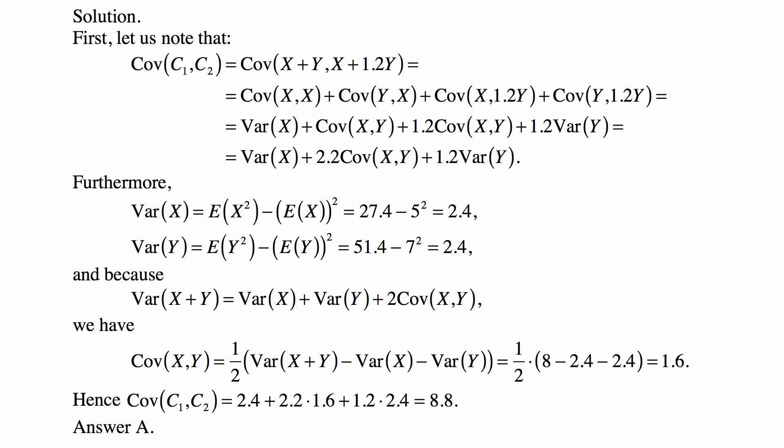And then the covariance of C₁ and C₂ is, well, what you get when you plug in all these values, Var(X) which is 2.4 plus 2.2 times Cov(X, Y), so 2.2 times 1.6 plus 1.2 times Var(Y) which is 2.4, and the answer is 8.8.